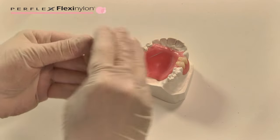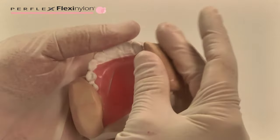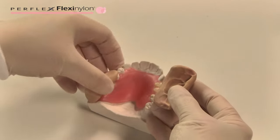Make putty matrix blocks and clean out the wax from the master model and the acrylic teeth.